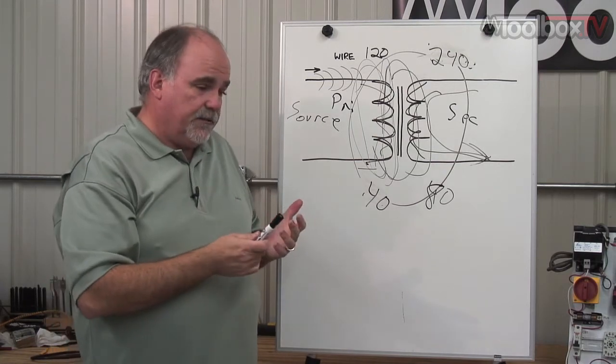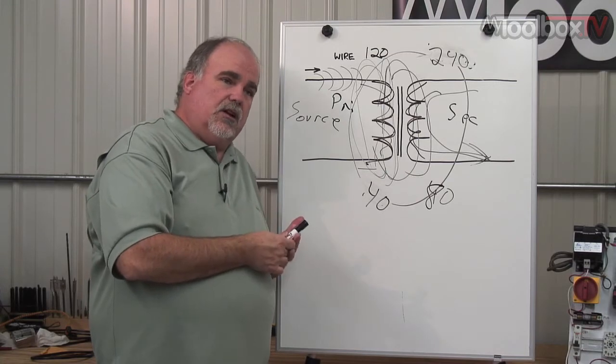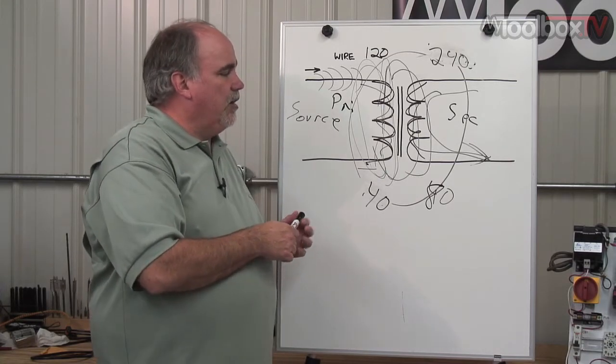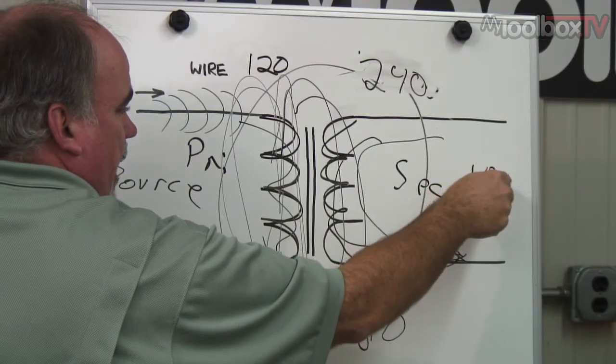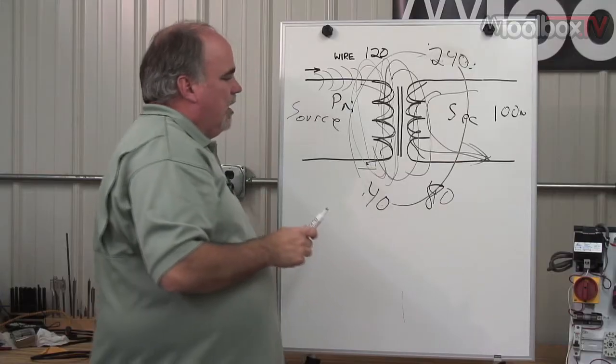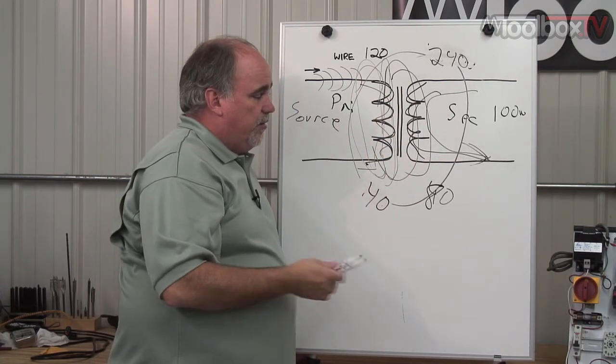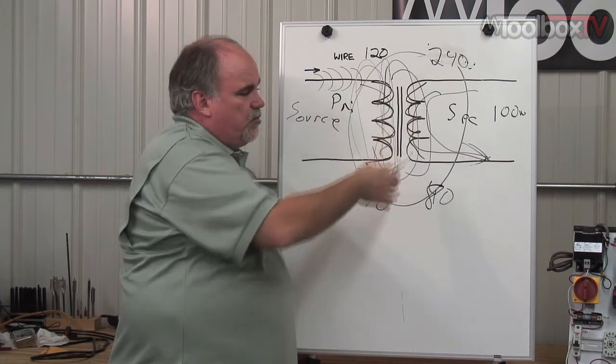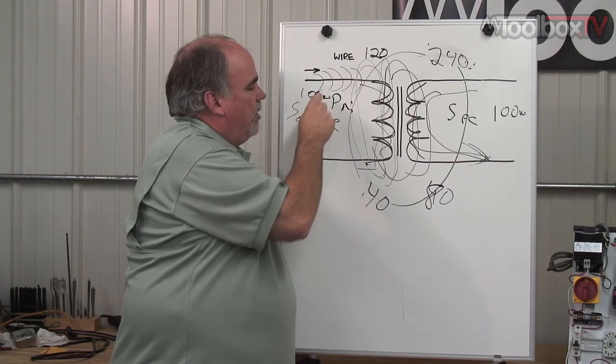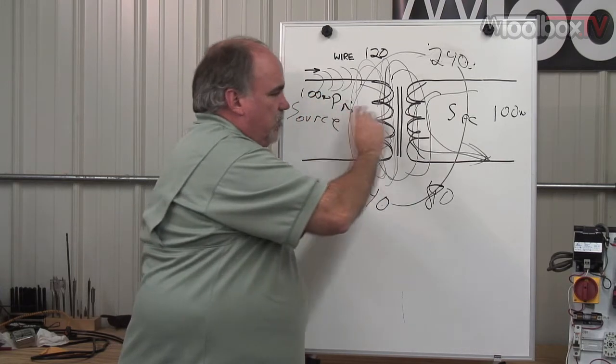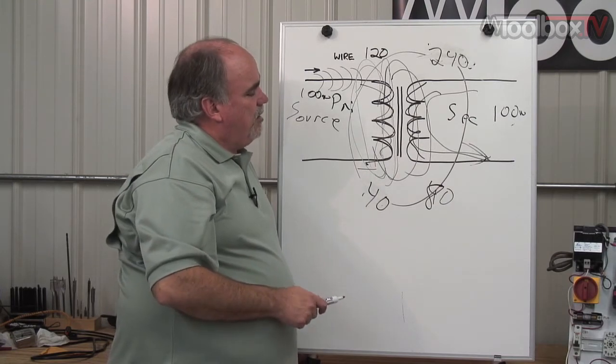The interesting thing about that is when you do that, the power doesn't change. Meaning, if you have a load out here, let's say a 100-watt light bulb, except for losses due to heat and other things which are beyond the scope of this video, if you provide 100 watts of power, the power doesn't change. You'll deliver 100 watts over here.